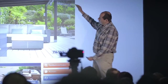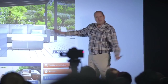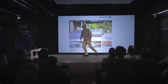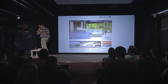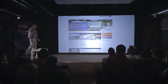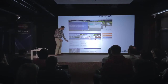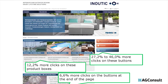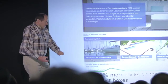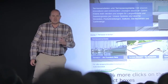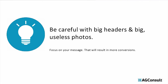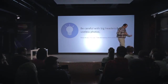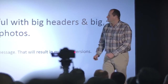Same page — big beautiful picture. But we saw the problem: with a big picture, the content gets pushed down. So what we did — we made it smaller. Content came up, and we now had 27 to 46 percent more people clicking on those buttons, 12 percent more people clicking on one of the products, and even the buttons at the bottom of the page saw an increase of 6 percent. You should be careful when using big header photos on top of your page — sometimes they push away your real message.